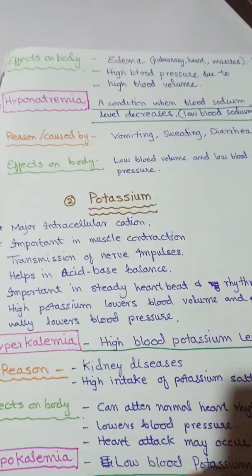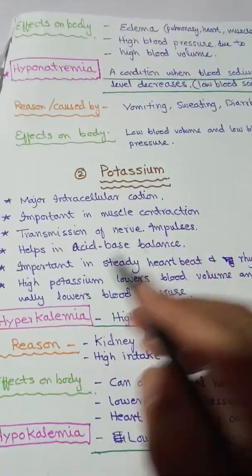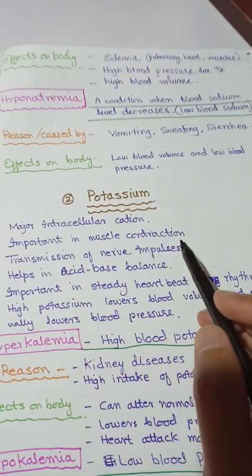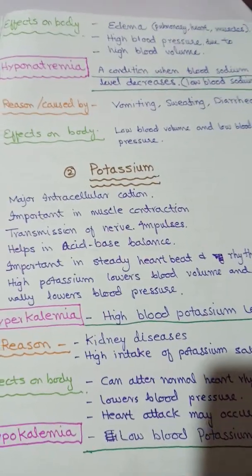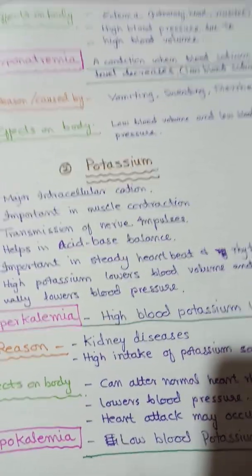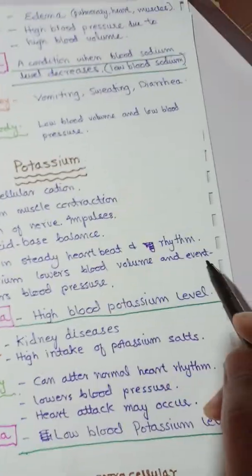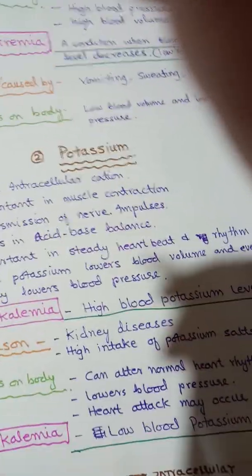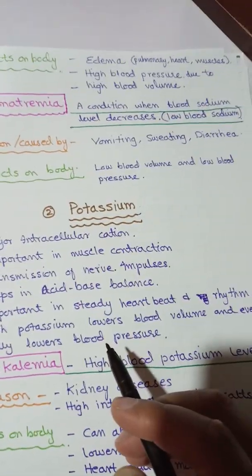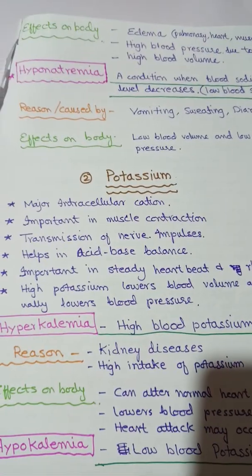The second important cationic mineral inside our body is potassium ion. Potassium ion is the major intracellular cation. It is important in muscle contraction and relaxation, transmission of nerve impulses, acid-base balance, and maintaining a steady heartbeat and rhythm. High potassium lowers blood volume and eventually lowers blood pressure.